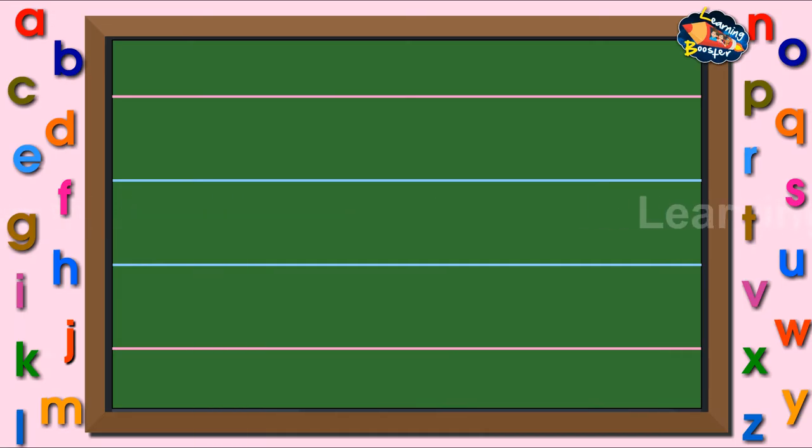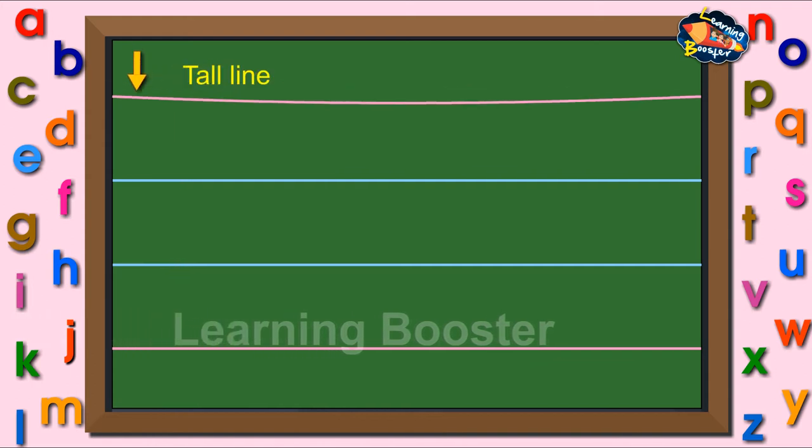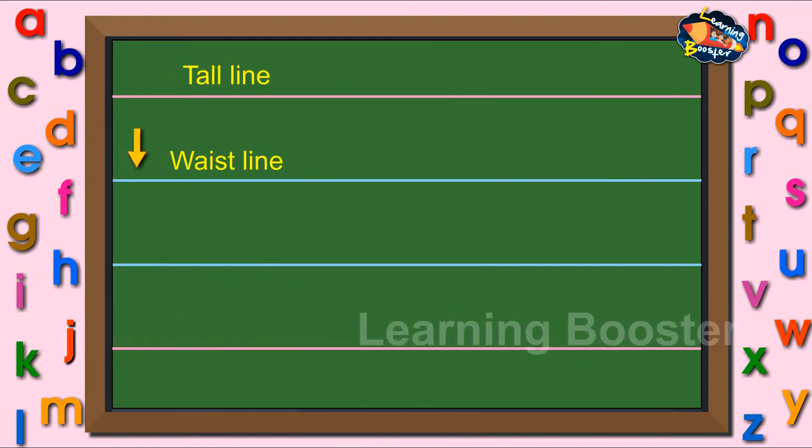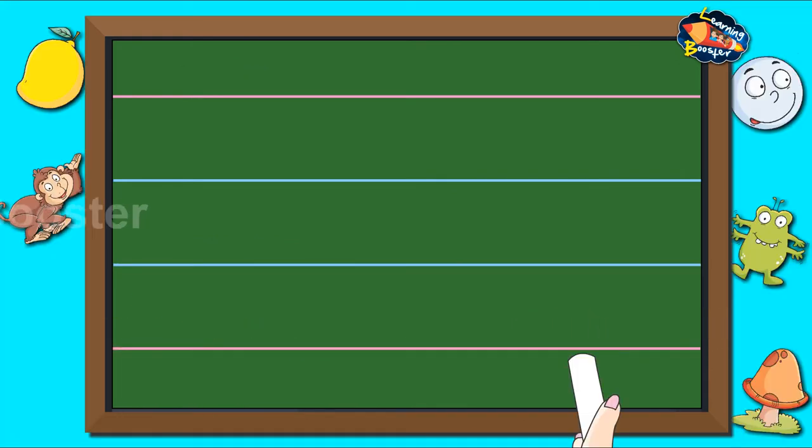We learned to write small letters A to Z using red and blue lines. Look at the two red and two blue lines. Each has a name: tall line, waist line, base line, and tail line. In this video,